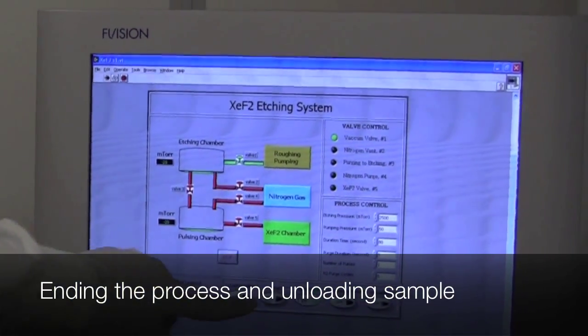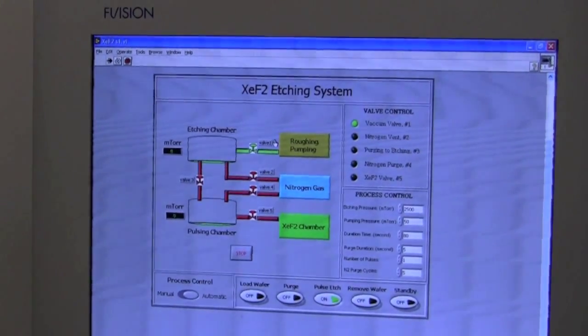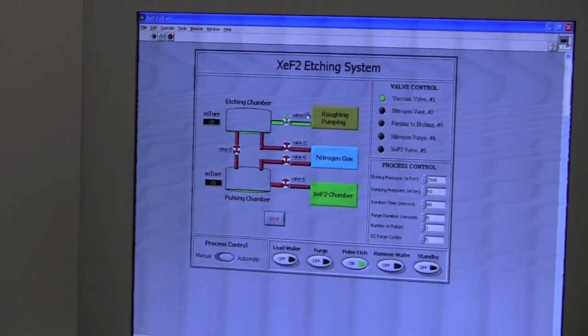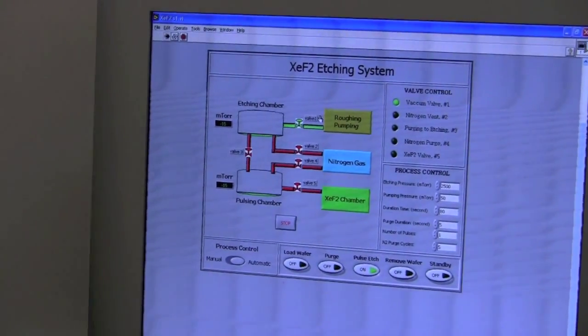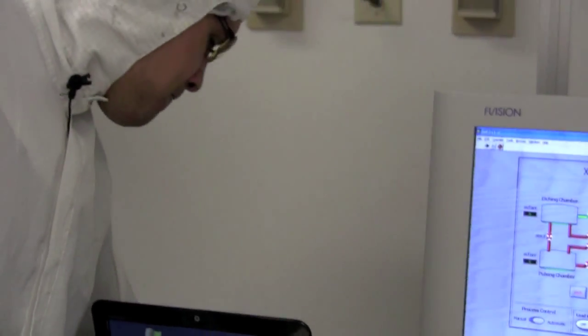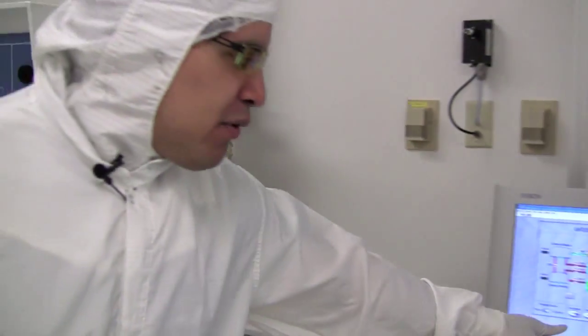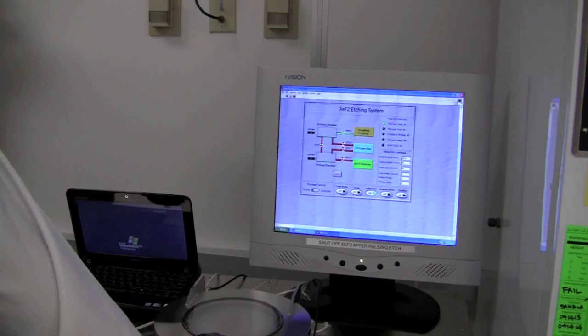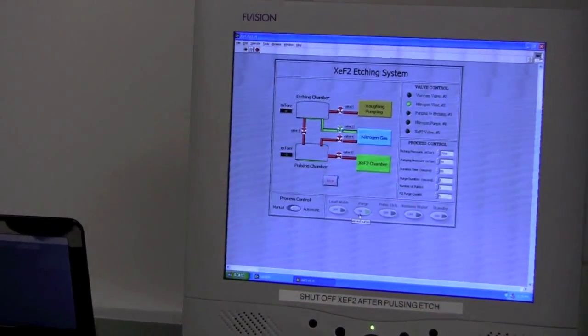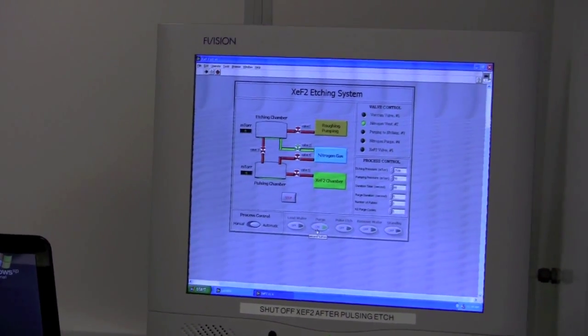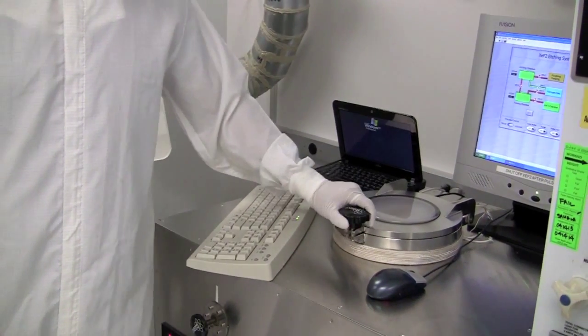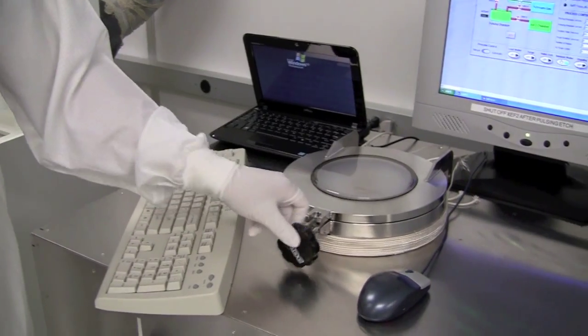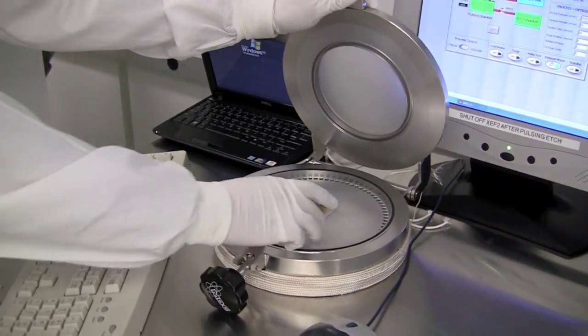So now our pulse etching routine is done. As you can see, the buttons are now solid again, and we're ready to continue our process. Before we do anything, we want to make sure that bottle behind the chamber is closed. Once the bottle is closed, you want to hit purge again. So we'll hit the purge button, and this will purge the chamber of any xenon difluoride gas that might be left over from our reaction. When your sample is done venting, go ahead and unfasten this again, and open the chamber, and take your sample out.